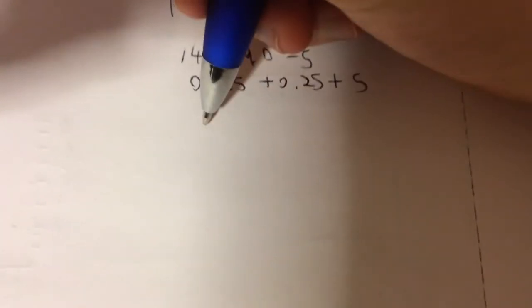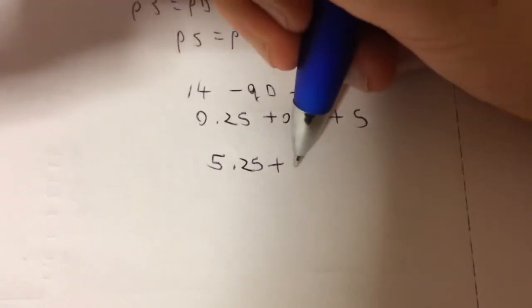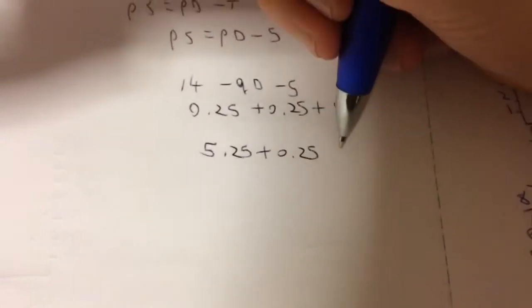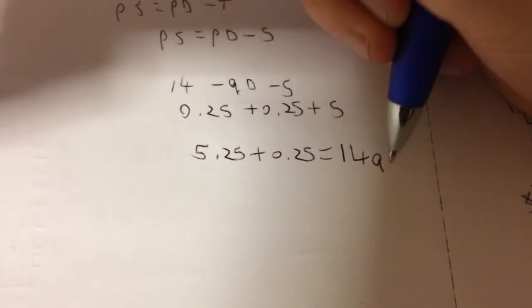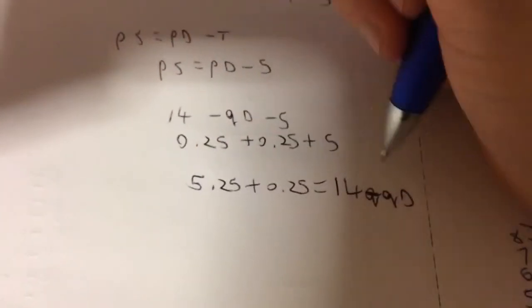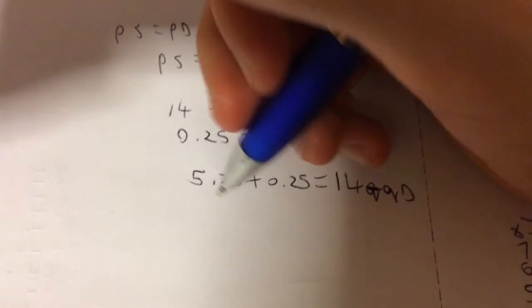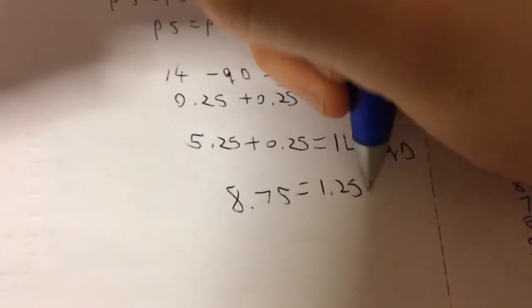So this then becomes 5.25 plus 0.25Q equals 14 minus QD. If we add them over, 1.25Q equals 8.75.